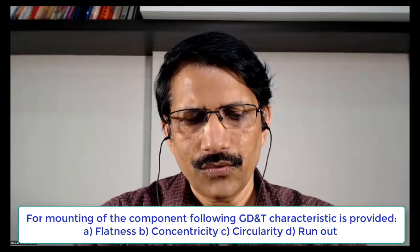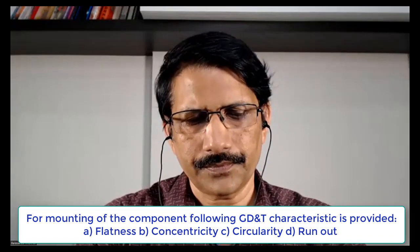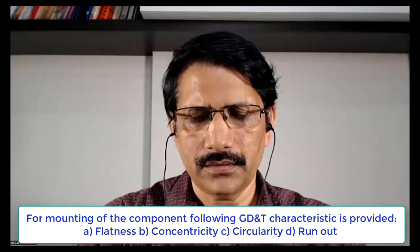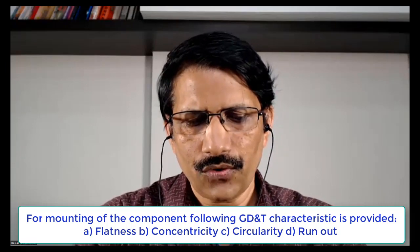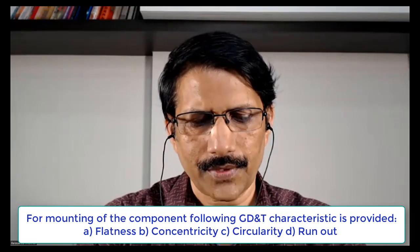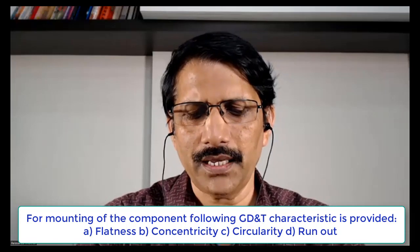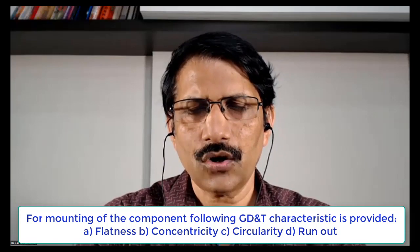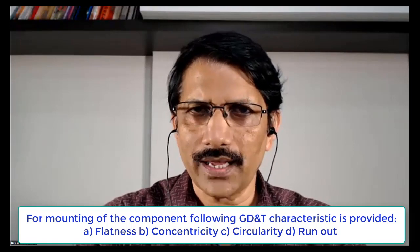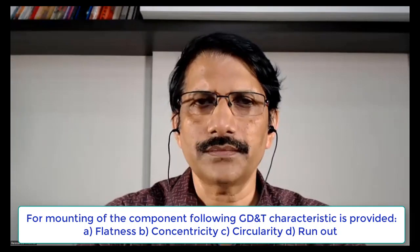Number nine: For mounting of a component, which following GD&T characteristic is provided? Option A: flatness, Option B: concentricity, Option C: circularity, Option D: run out.